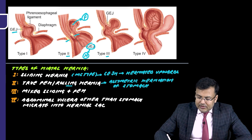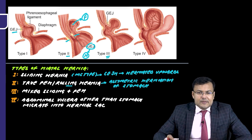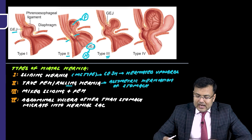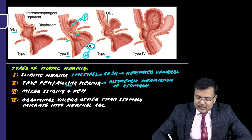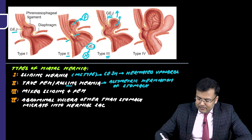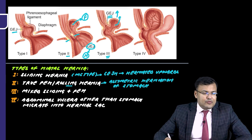Type 3 is known as mixed sliding as well as paraesophageal hernia. It is called both because there is herniation of the GE junction upwards, and simultaneously there is also herniation of the fundus of the stomach. So this is mixed sliding and paraesophageal hernia.